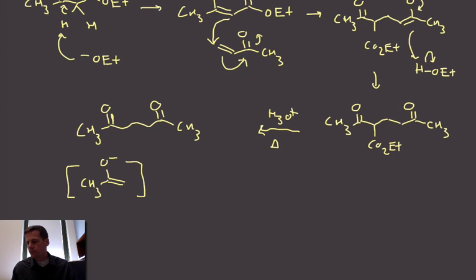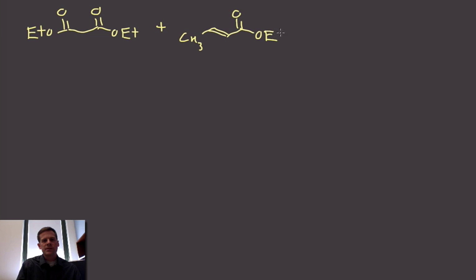Let me give you one more example of a Michael reaction. In this case, let's use diethylmalonate as our nucleophile, and we'll use a slightly more complicated electrophile - an alpha-beta unsaturated ester with a beta substituent. If we treat this with some base, we will get this product.